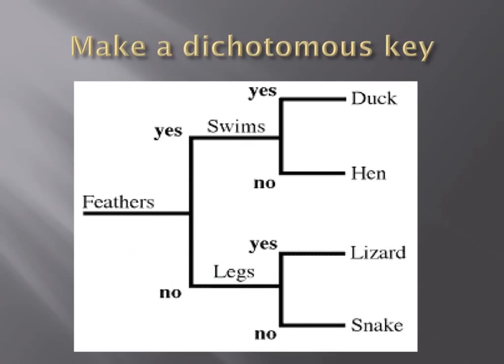A dichotomous key is an excellent tool if you find something particularly complex or confusing. The best way to create a dichotomous key is to ask questions that can be answered either yes or no. Your yes or no answers will eventually lead you to the correct answer.